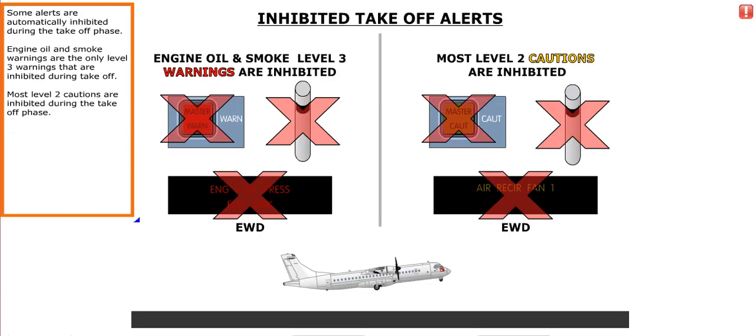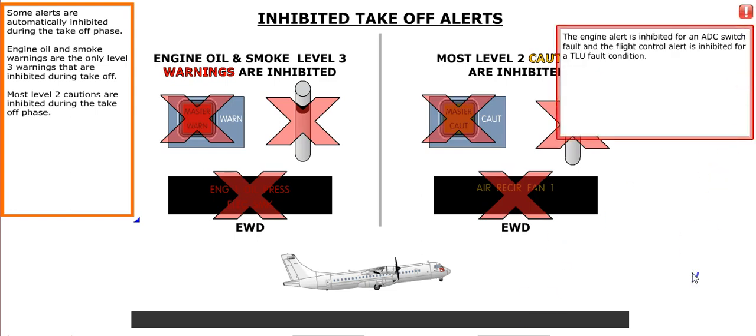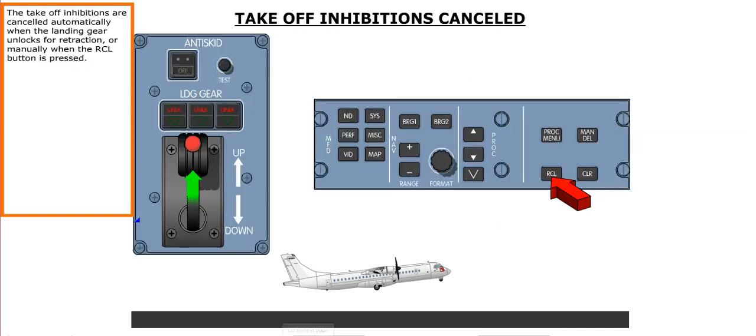Some alerts are automatically inhibited during the takeoff phase. Engine oil and smoke warnings are the only level 3 warnings that are inhibited during takeoff. Most level 2 cautions are inhibited during the takeoff phase. The takeoff inhibitions are canceled automatically when the landing gear unlocks for retraction, or manually when the Recall button is pressed.